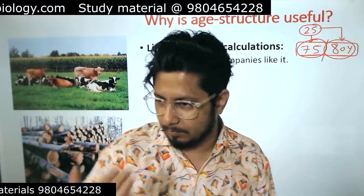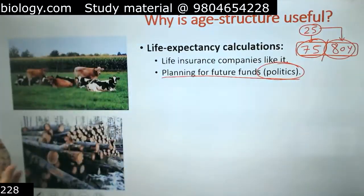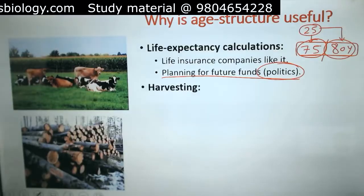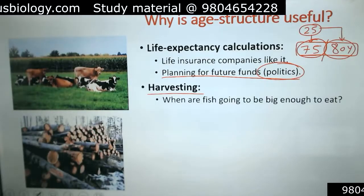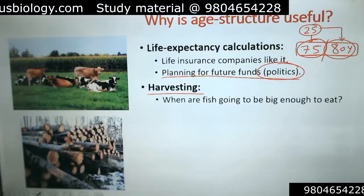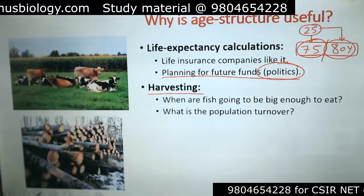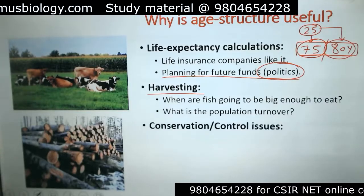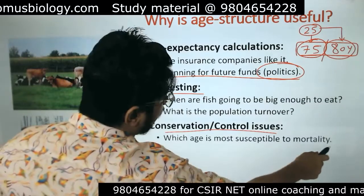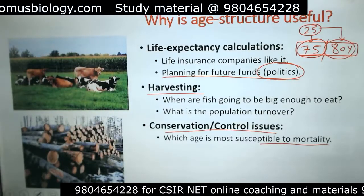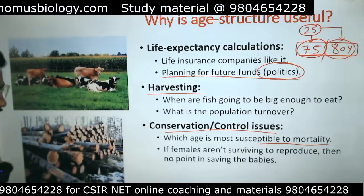Other applications include planning of future funds in government and politics, which also uses life expectancy calculations. In agriculture and fisheries harvesting, life tables and age structure help determine when fish are big enough to eat, how to design the environment, and what population turnover looks like. For conservation and control, life tables identify which age is most susceptible to mortality so we can protect organisms at that stage — for example, if females aren't surviving long enough to reproduce, saving the babies has no point.